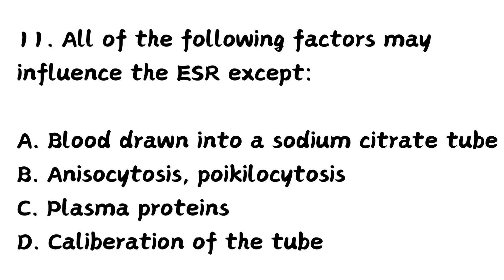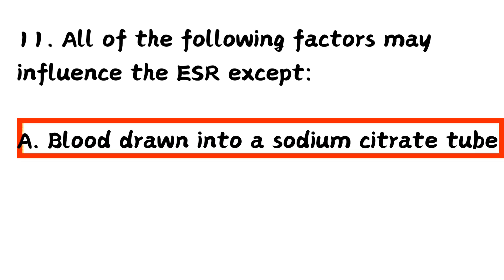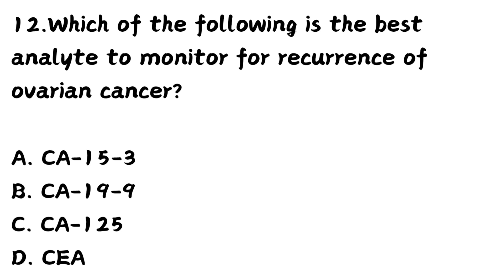Question number 11. All of the following factors may influence the ESR except: Option A, blood drawn into a sodium citrate tube. Option B, anisocytosis and poikilocytosis. Option C, plasma proteins. Option D, calibration of the tube. The right answer is Option A — blood drawn into a sodium citrate tube — because for ESR estimation, blood has to be drawn into a sodium citrate tube, so it will not affect the ESR value.